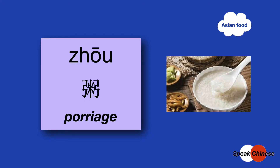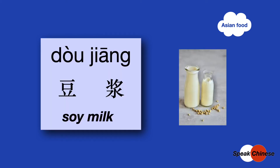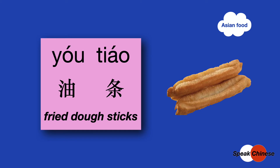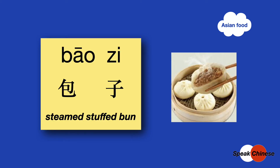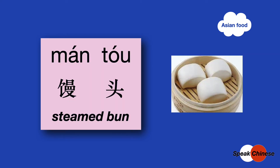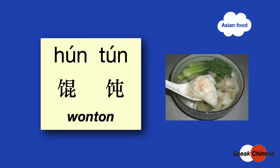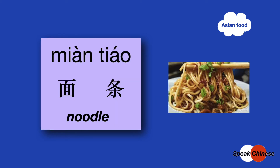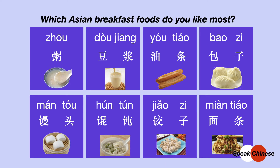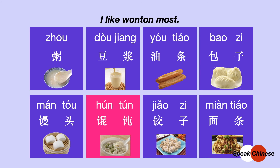你今天早餐吃了什么? 粥, porridge. 豆浆, soil milk. 油条, fried dough sticks. 包子, steamed stuffed bun. 馒头, steamed bun. 馄饭, wonton. 饺子, dumpling. 面条, noodle. Which Asian breakfast food do you like most? 你最喜欢哪一个亚洲的早餐美食? 粥,豆浆,油条,包子。 还是馒头,馄饨,饺子,面条。 嗯,我最喜欢馄饨。 你呢?